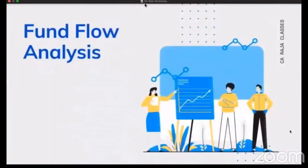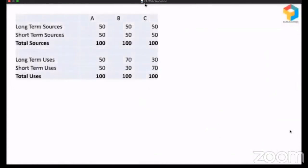Let's get into the webinar. I need your participation here. Look at this. There are three companies A, B, and C. You have information about their long-term sources and short-term sources, total sources. You have information about their long-term uses, short-term uses and total uses. I want you to digest this information, spend some time, and then identify which company is in trouble here. Is it company A, company B, or company C?